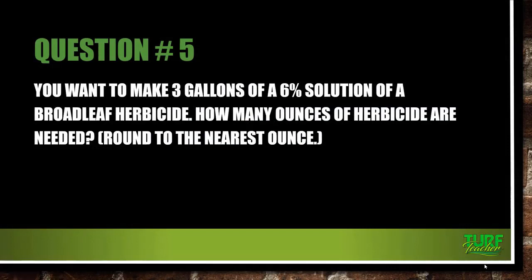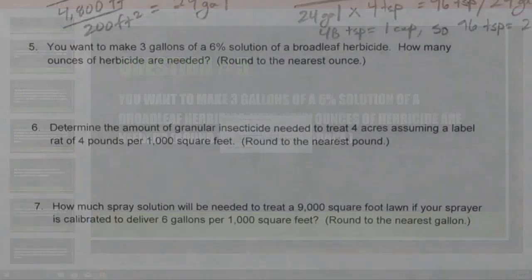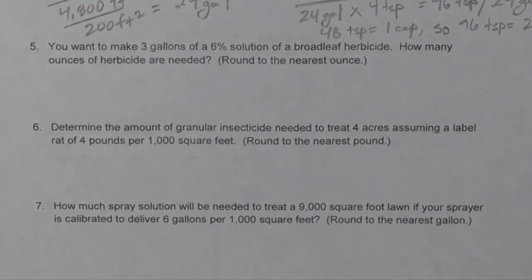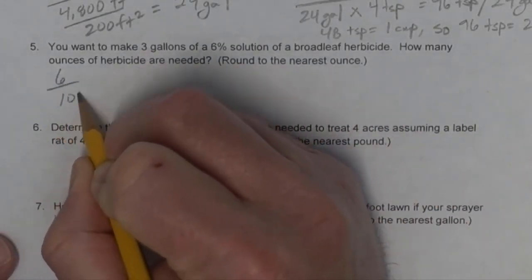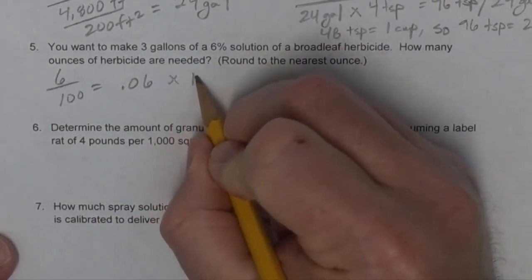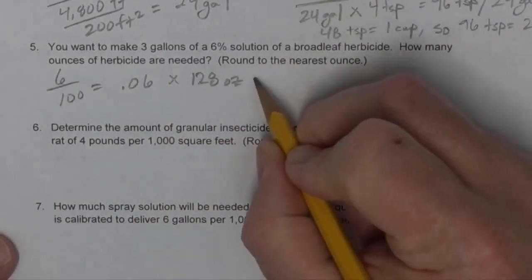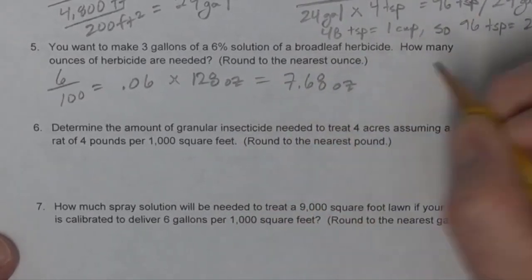Question number five: you want to make 3 gallons of a 6% solution of broadleaf herbicide. How many ounces of herbicide are needed? Round to the nearest ounce. We know that 6% equals 6 over 100, or 0.06. There are 128 ounces in a gallon. So 0.06 times 128 equals 7.68 ounces per gallon.